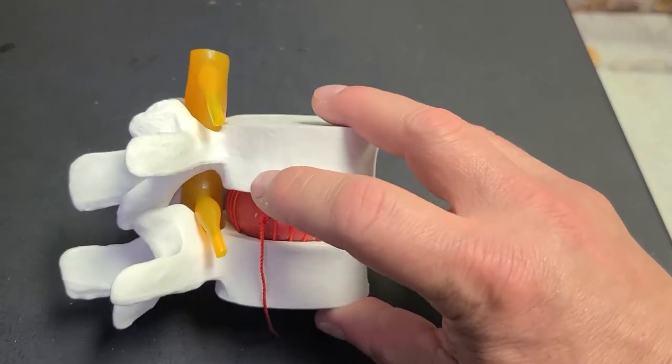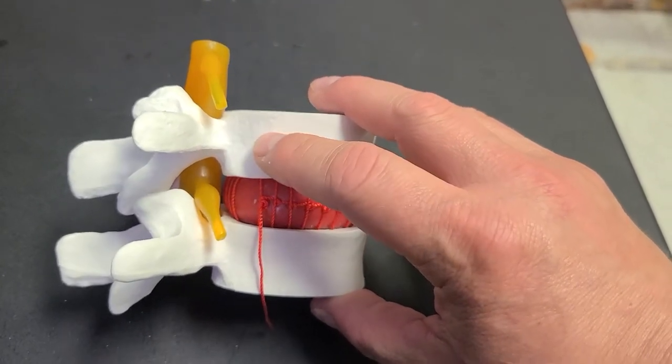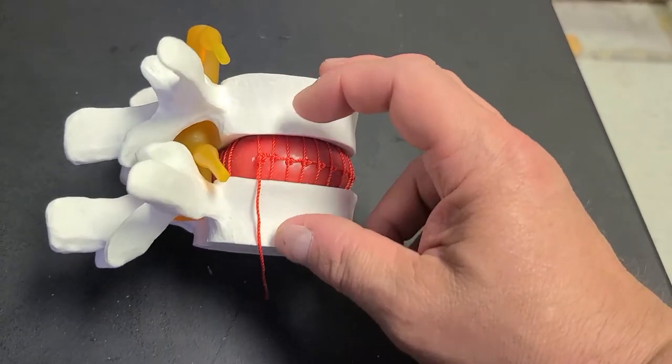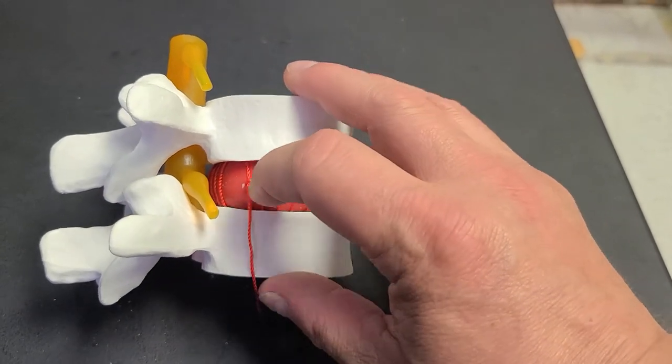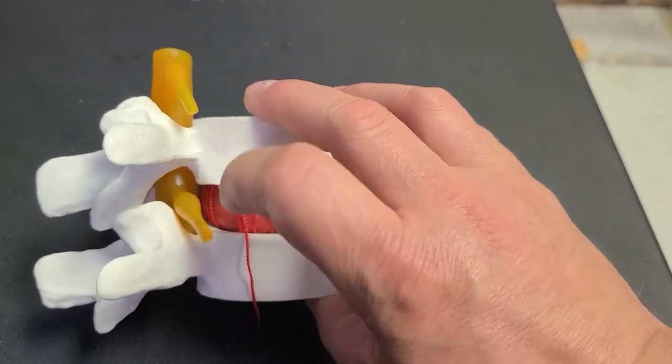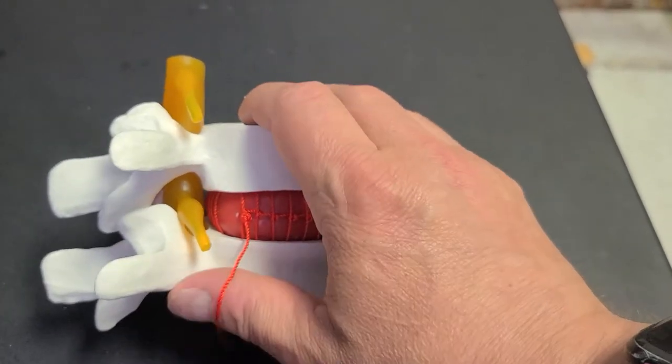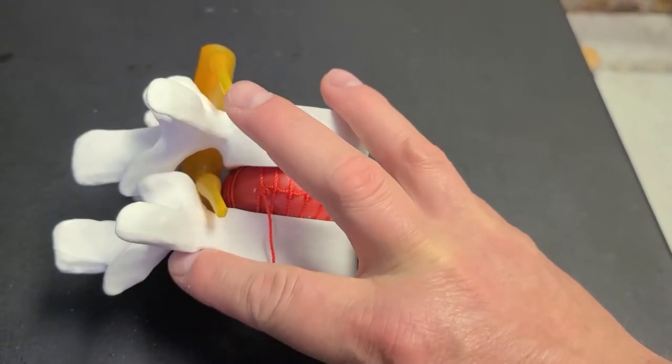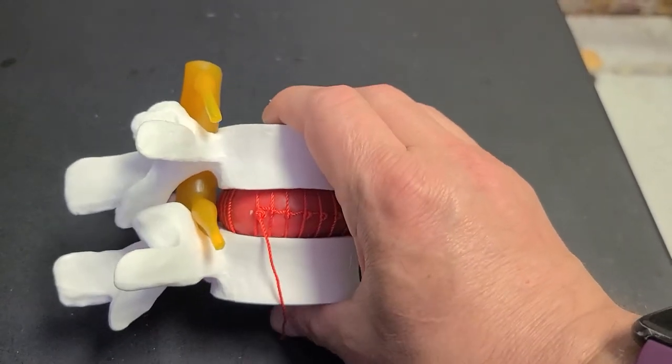So in general, if this was the L3-L4 vertebra, and we have the L3-L4 disc here, the L3 nerve here that exits at that level would not actually be as affected as the one below it, the L4. So that's one issue here.